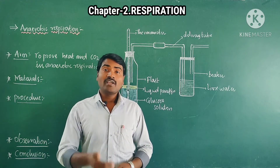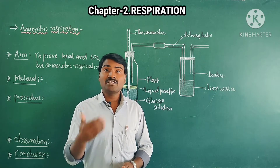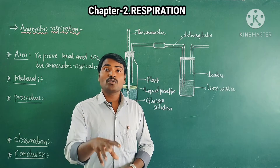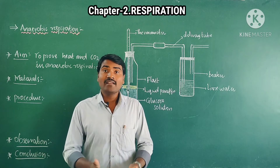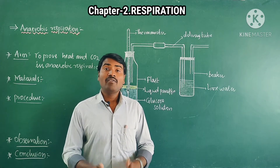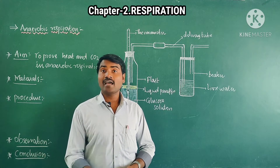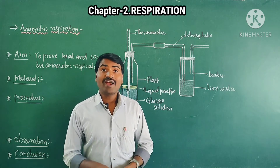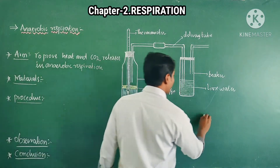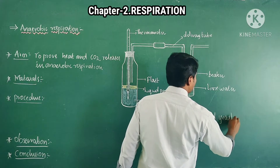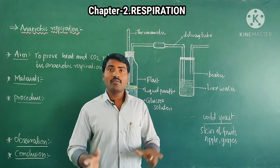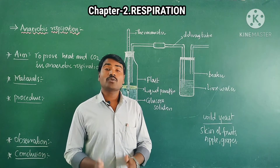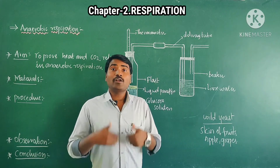Some microorganisms like bacteria and yeast can also carry out anaerobic respiration. So let us take yeast in our activity. When we supply glucose solution to yeast, they carry out anaerobic respiration very rapidly and produce ethanol and carbon dioxide as byproducts. This wild yeast normally grows on the skin of fruits, especially grapes, and also on different types of foods.